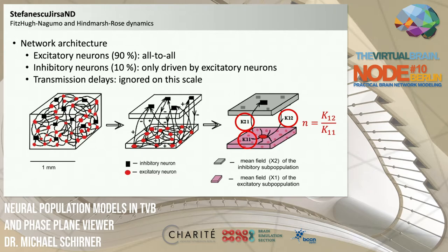We reduce the number of parameters further by setting K21 and K11 — excitatory-to-inhibitory and recurrent excitatory coupling — to roughly the same value, and only specifying the ratio n of K12 (inhibitory-to-excitatory coupling) to the recurrent excitatory coupling. This further reduces the number of free parameters.